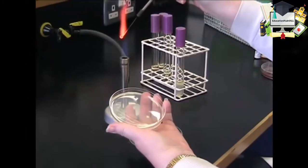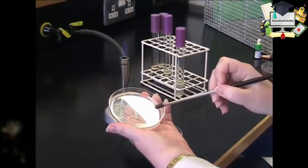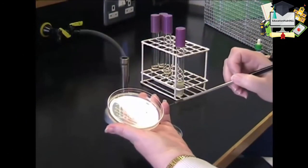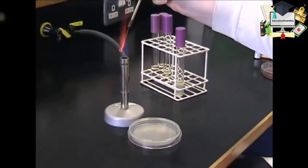Remember to flame when you rotate the plate. Continue streaking across in order to dilute your bacteria. Always flame your loop at the end.